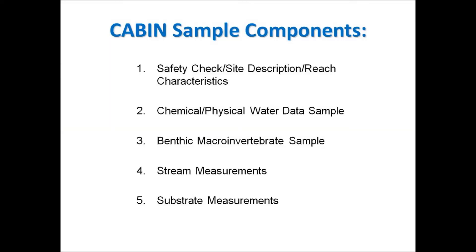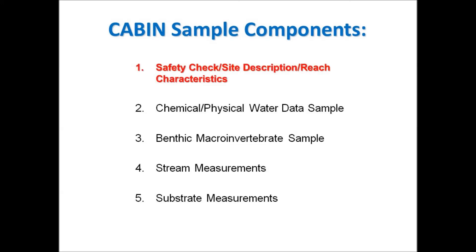A CABIN sample consists of several components or steps including the safety check, site description, and reach characteristics; the chemical and physical parameters water data sample; the benthic macroinvertebrates sample; stream measurements including a cross section and flow; and measurements of the river's substrate. First, let's look at the safety check, site description, and reach characteristics.